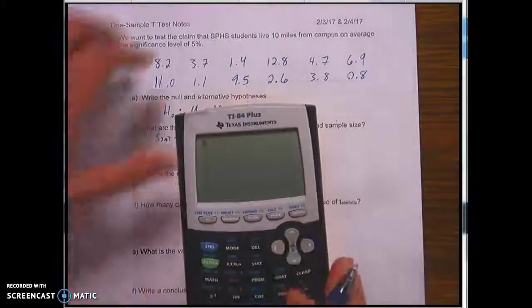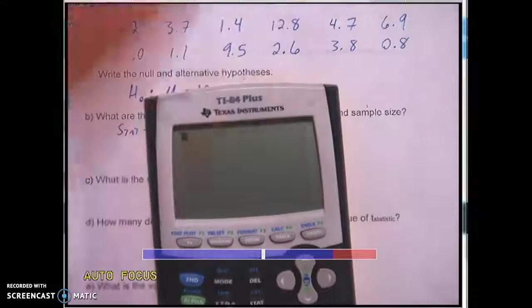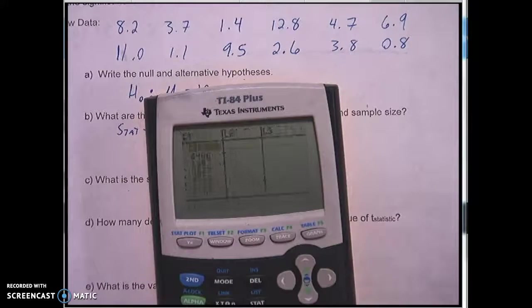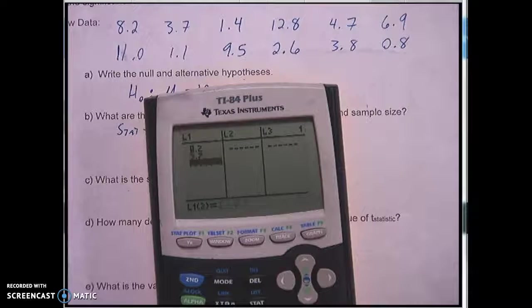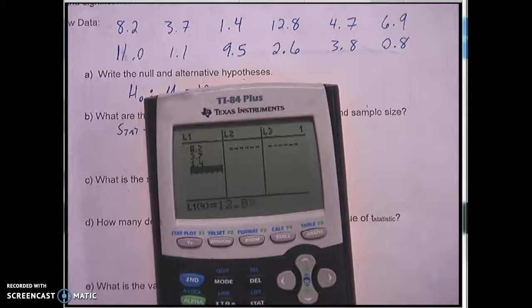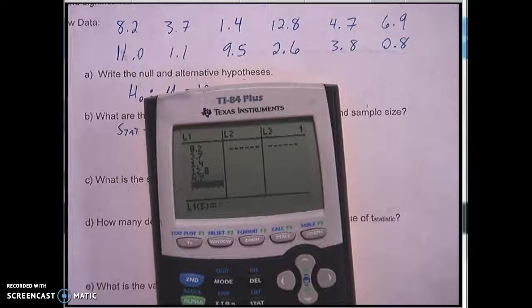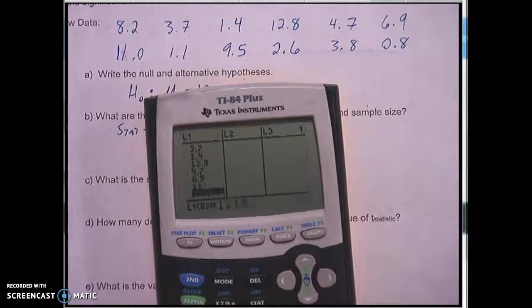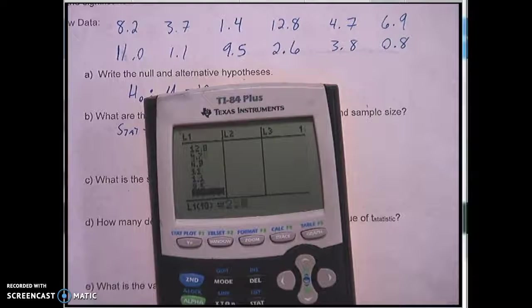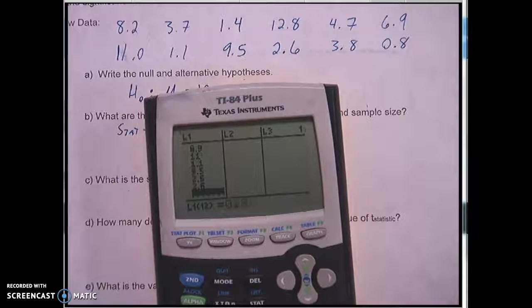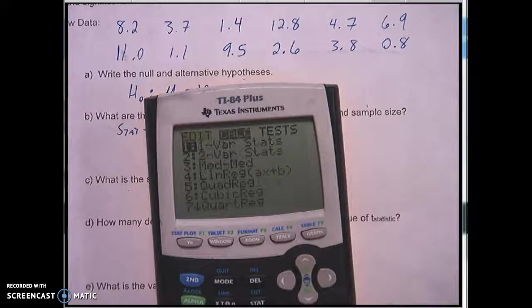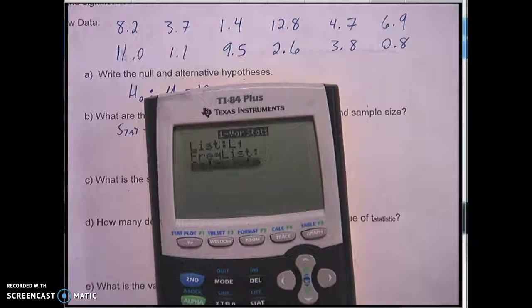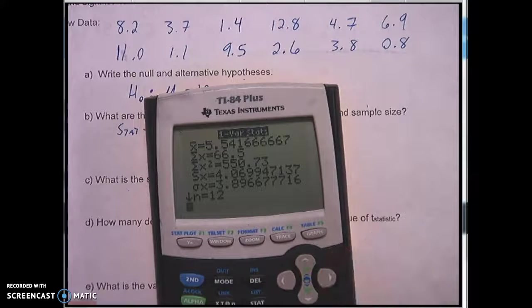So I'm going to go to my calculator stat edit and I'm going to type in the data values 8.2, 3.7, 1.4, 12.8, 4.7, 6.9, 11.0, 1.1, 9.5, 2.6, 3.8, 0.8.